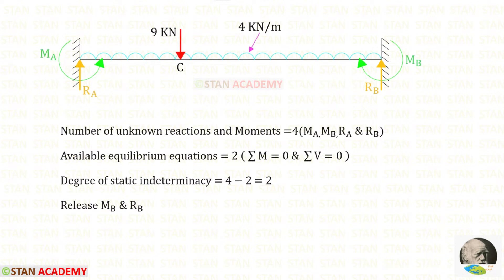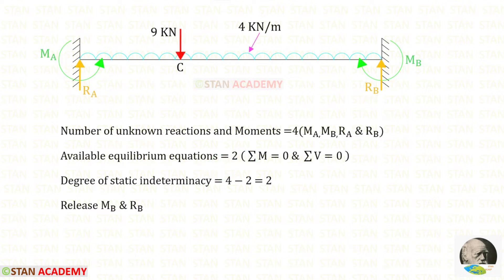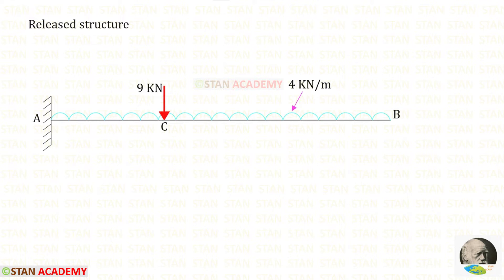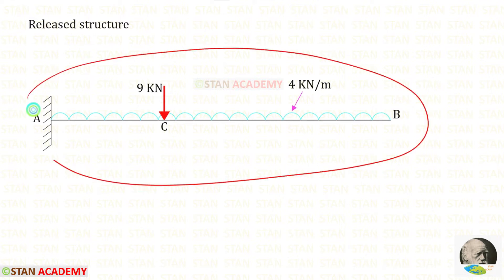Now let us find the degree of static indeterminacy. In this beam, the number of unknown reactions and moments are 4: the moments MA and MB and the reactions RA and RB. The available equilibrium equations are 2, so the degree of static indeterminacy equals 4 minus 2, which gives 2. To make this beam statically determinate, we have to remove any two of these four. Let us remove MB and RB. With MB and RB removed from point B, point B becomes a free end, so the beam changes from a fixed beam to a cantilever beam.